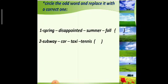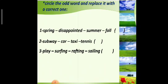Number two: subway, car, taxi, tennis. Subway, car, and taxi are transports, but tennis is a sport, so it is the odd one. The replacement will be any transport like train or bus. Number three: play, surfing, rafting, sailing. The odd one is 'play' and we should replace it with 'horseback riding.' Number four: said, go, hot, happy. Said, hot, and happy are adjectives, but 'go' is a verb, so it is the odd one. The replacement will be any adjective.